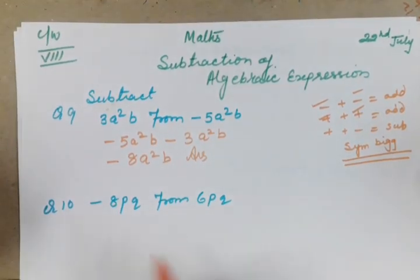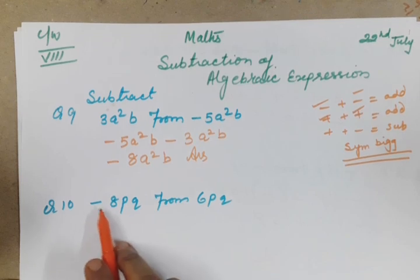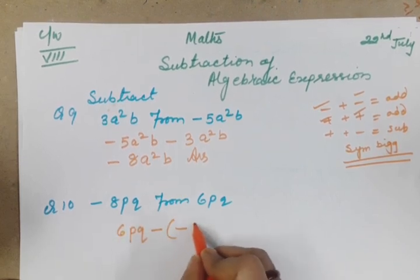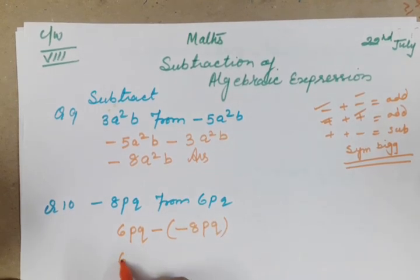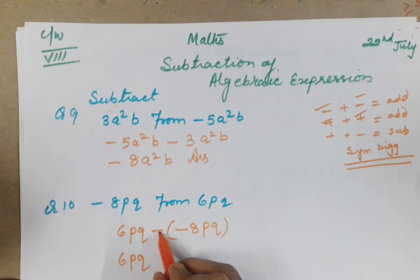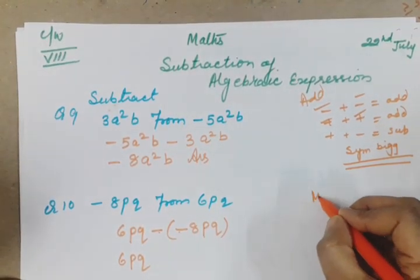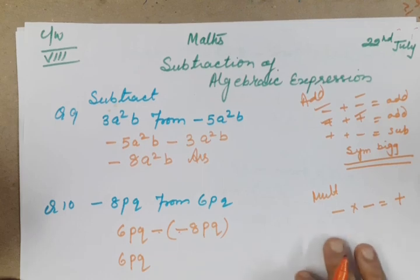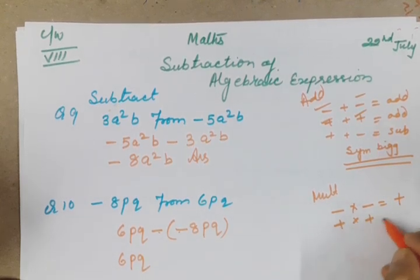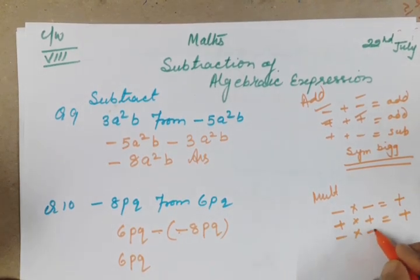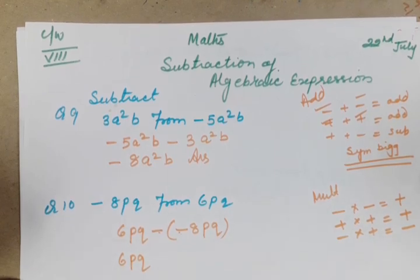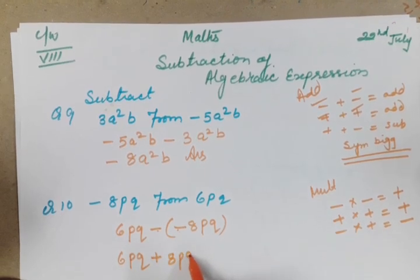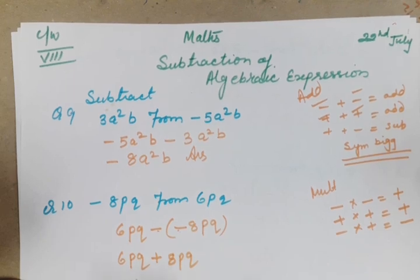Come to question number ten. Subtract -8pq from 6pq. We will write 6pq first, and from this minus what? -8pq. We cannot write both signs directly together so we put bracket: 6pq minus (-8pq). Now see, this is for multiplication. When two negative signs multiply, it becomes positive. Two plus signs multiply, also positive. One minus and one plus into, then you write minus. Here both minus, so minus minus becomes plus: +8pq. Plus plus, 6 and 8 is 14pq, this is your answer.